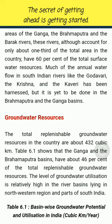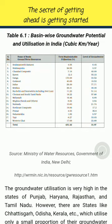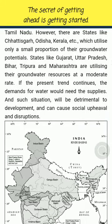Groundwater Resources: The total replenishable groundwater resources in the country are about 432 cubic km. The Ganga and the Brahmaputra basins have about 46% of the total replenishable groundwater resources. The level of groundwater utilization is relatively high in the river basins lying in the northwestern region and parts of South India. The groundwater utilization is very high in the states of Punjab, Haryana, Rajasthan and Tamil Nadu. However, states like Chhattisgarh, Odisha and Kerala utilize only a small proportion of their groundwater potentials. States like Gujarat, Uttar Pradesh, Bihar, Tripura and Maharashtra are utilizing their groundwater resources at a moderate rate. If the present trend continues, the demands for water would exceed the supplies, which will be detrimental to development and can cause social upheaval and disruptions.